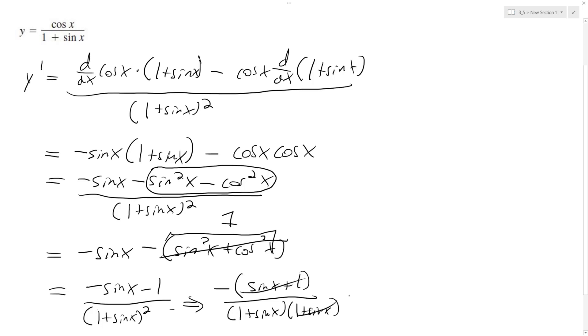So these cancel each other out, and we're simply left with negative 1 over 1 plus sine x.